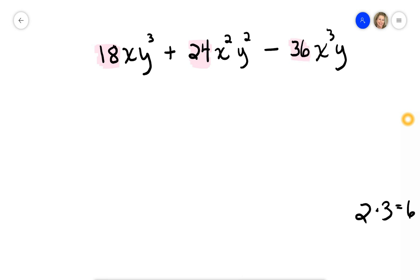Okay, so I can factor out a 6. Is that the greatest? I believe it is, but I must double check. I'm gonna put the 6 right here, and then I'm gonna do the division. 18 divided by 6 gives me 3, 24 divided by 6 gives me 4, and 36 divided by 6 is 6.